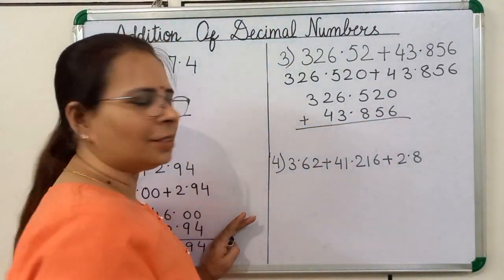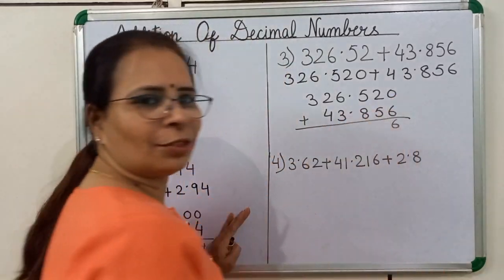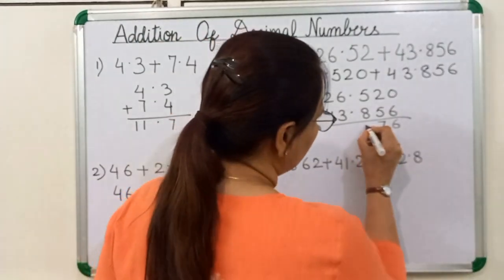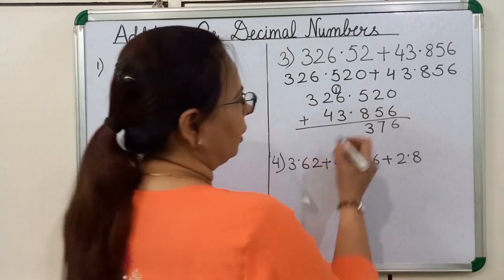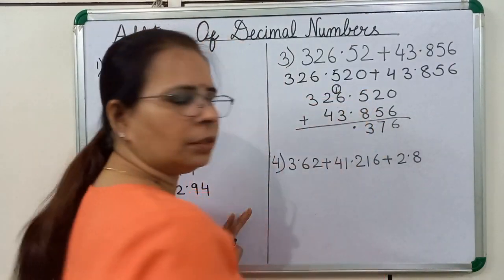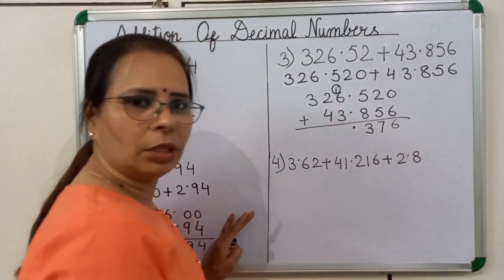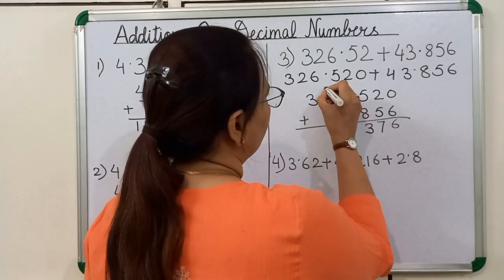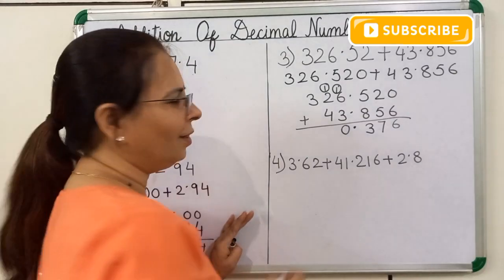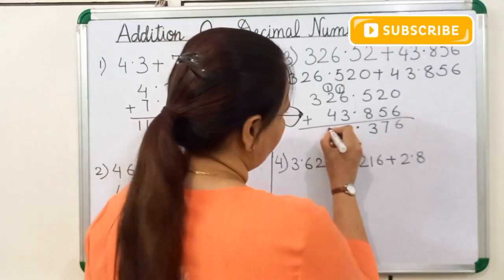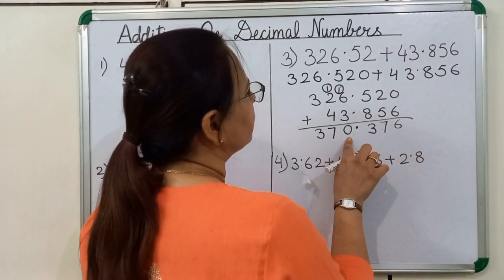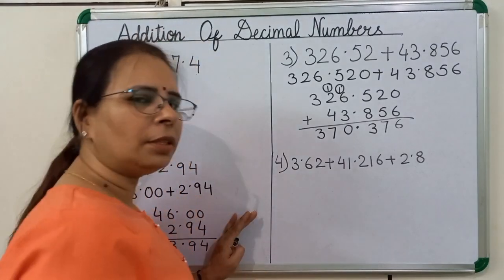Now start addition. 0 plus 6 is equal to 6. 2 plus 5 is equal to 7. 5 plus 8 is equal to 13 — we will write 3 and 1 is carried over. Now we will put the decimal point. 1 plus 6 is equal to 7. 7 plus 3 is equal to 10 — we will write 0 and 1 is carried over. Now 2 plus 1 is equal to 3. 3 plus 4 is equal to 7. And here only 3 is there, we will write 3. So 370.376 is the answer.